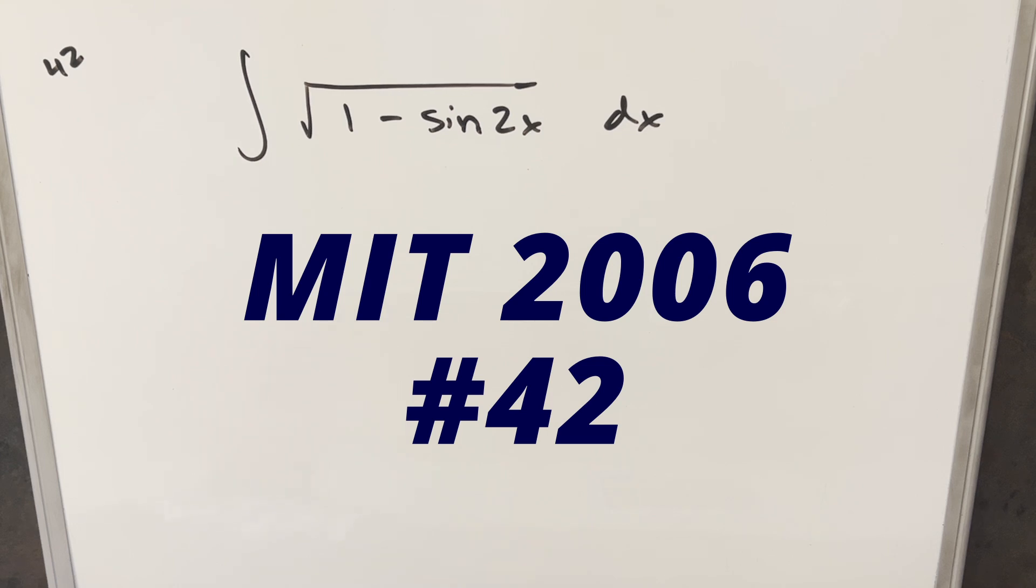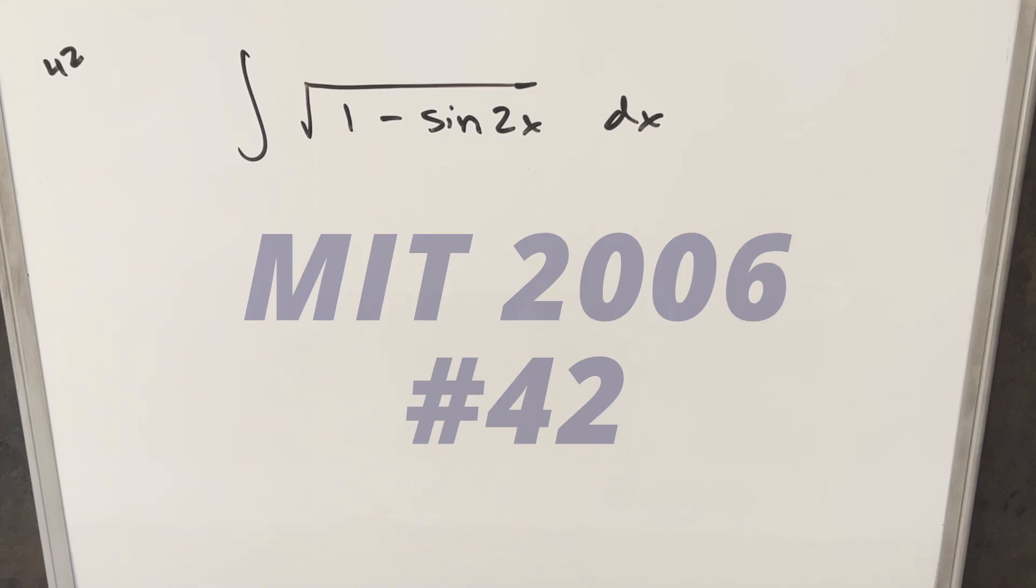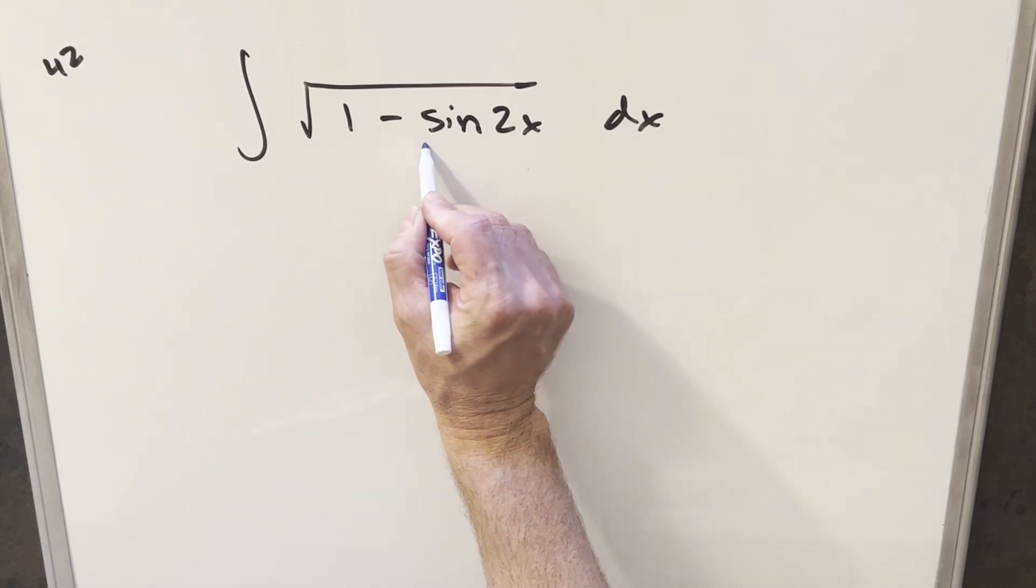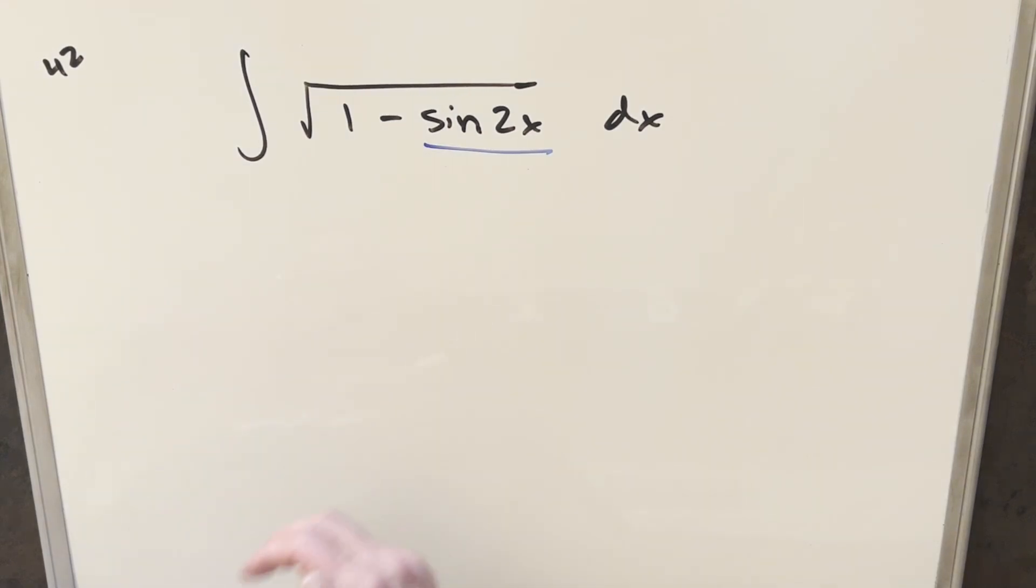We've got the integral of the square root of 1 minus sine 2x dx. The first thing I noticed here is just having sine 2x inside the square root. This has come up a lot lately, especially in the 2006 integration B. What we can do is actually manipulate this into a different form where it's going to be easier to deal with.